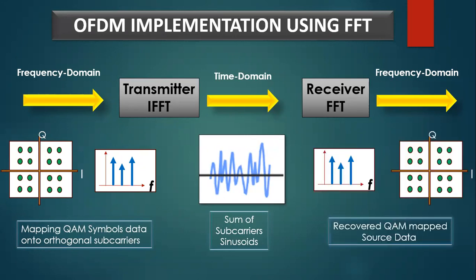At the receiver, an FFT block is used to process the received signal and bring it into the frequency domain, which is used to recover the original data bits.